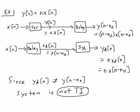The two flowcharts result in different sequences. In one case it's (n - n0)·x(n - n0), and in the other the input is delayed but its n term hasn't changed at all. So the system is not time invariant.